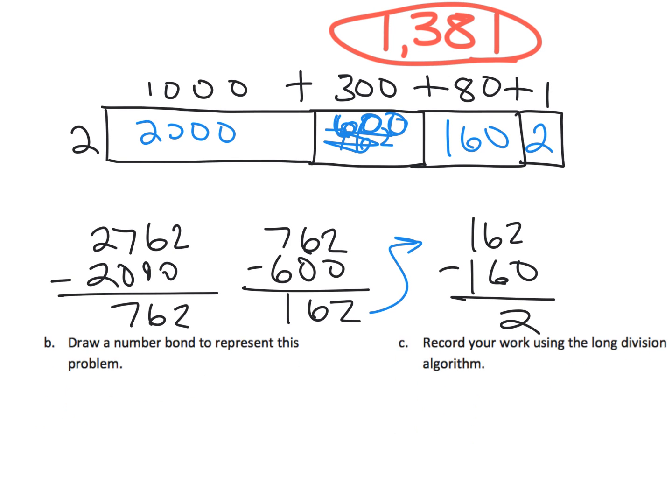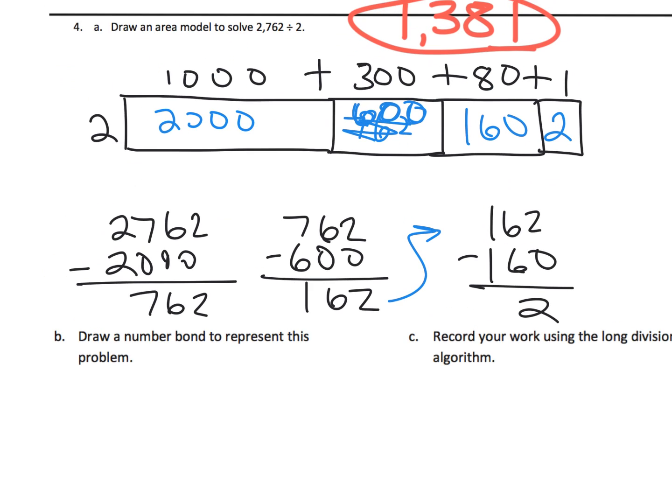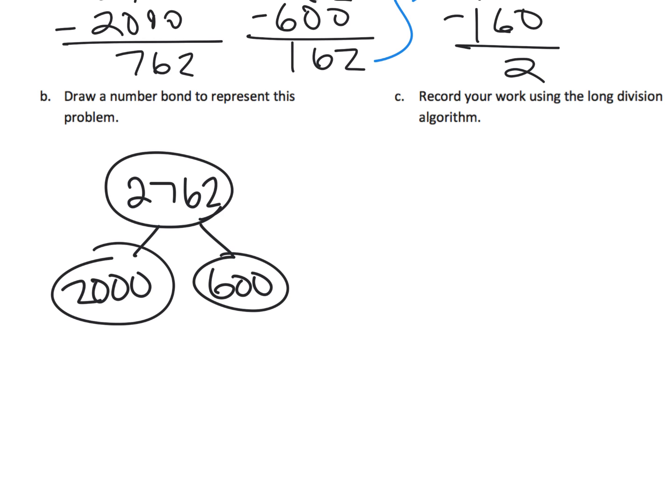So what would the number bond look like? Well, the number bond is that classic thing. So we got 2762. And we broke it up into 2000, then we broke it up into 600, then we broke it up into 160, then we broke it up into 2. So our number bond is going to be 2000 divided by 2,